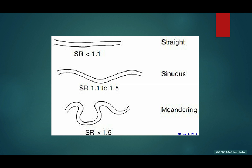Where the sinuosity ratio is about 1.1 or less, it is classified as a straight river or straight channel. Where it is between 1.1 and 1.5, it is sinuous. And where it is above 1.5, it is classified as meandering. Some of these values may differ slightly for different authors, but overall they all fall within a similar band.